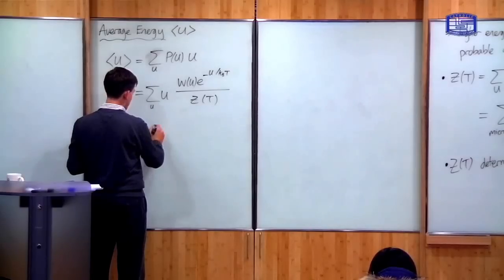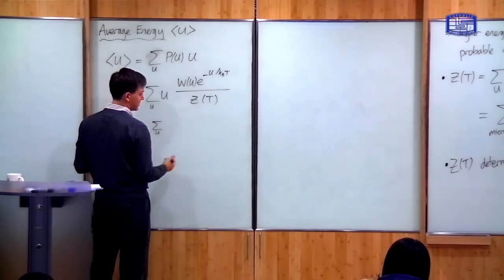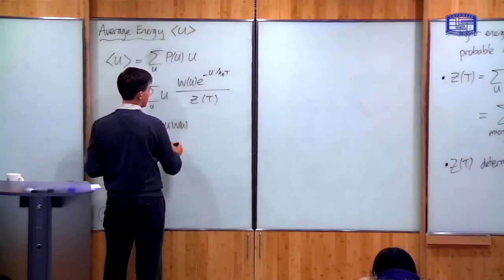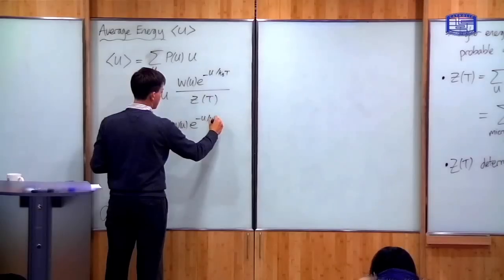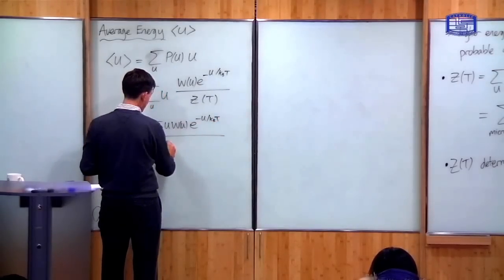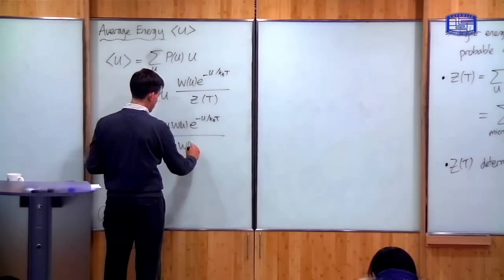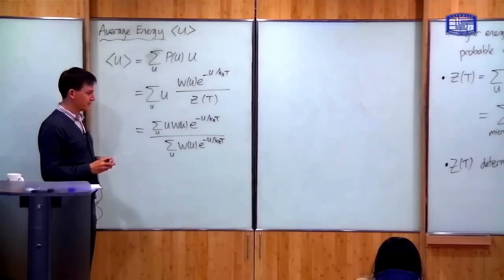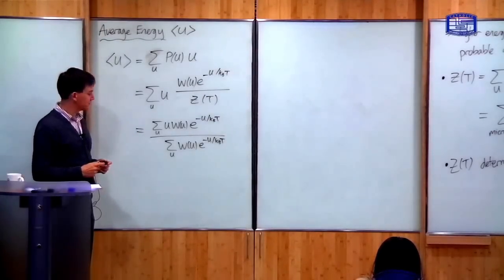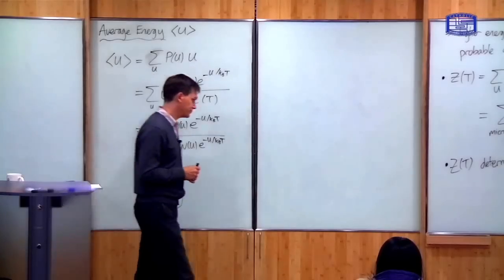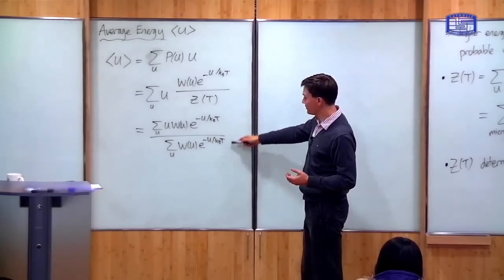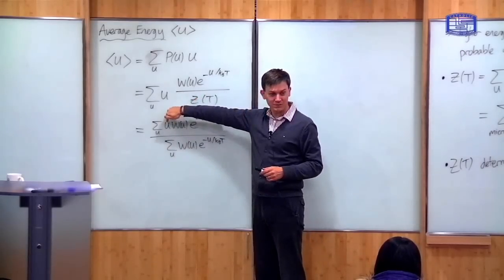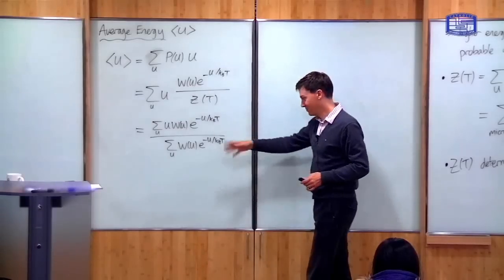Now if I write this down putting Z explicitly in terms of the number of microstates using that formula over there, this becomes: sum over U of U times W of U times e to the minus U over k_B T, divided by Z, which is the sum over U of W of U times e to the minus U over k_B T. So I've just put the explicit formula for Z in there.